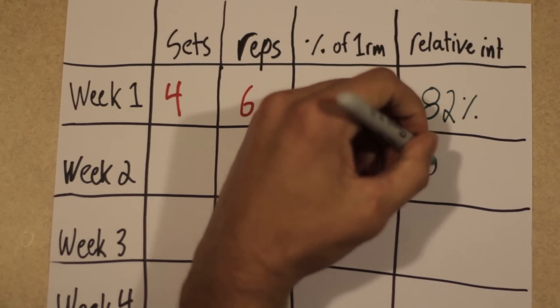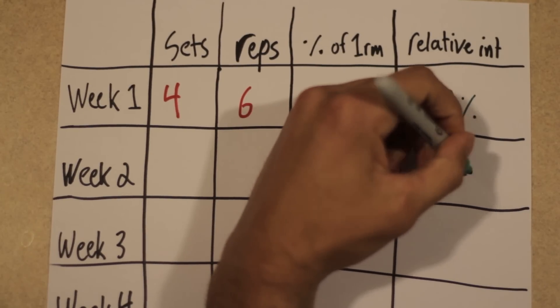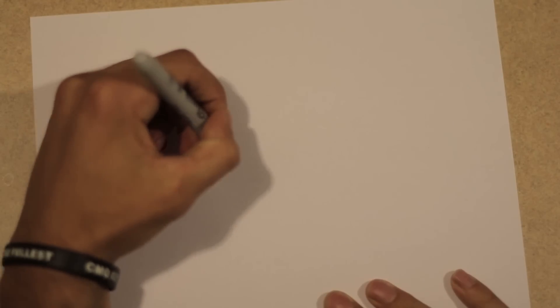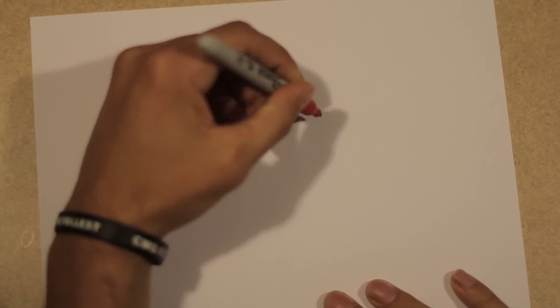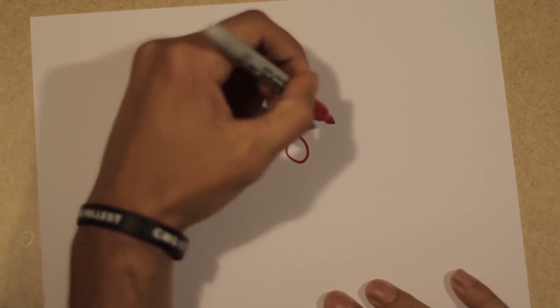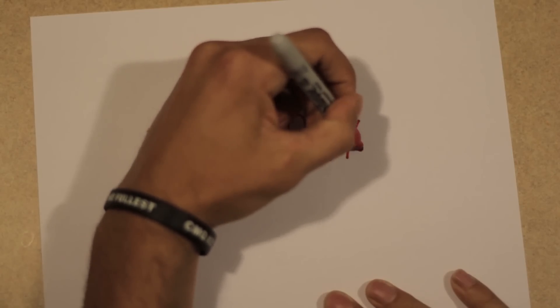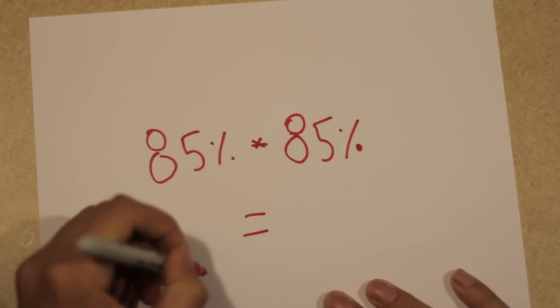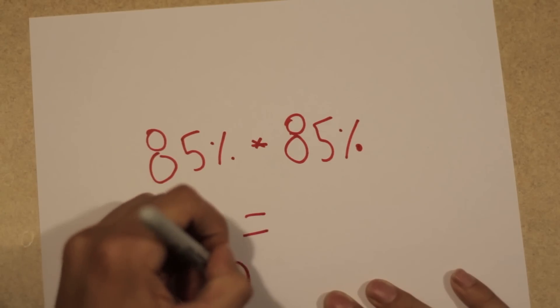For the next week, let's bump the intensity up to say 85% relative intensity. If we were to keep the same reps as last week in 6 reps per set, we would keep our rep max percentage of 85%. And now we would just multiply by our new relative intensity, which is 85% as well. That gives us an actual intensity of 72%, 2% higher than last week.